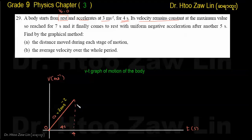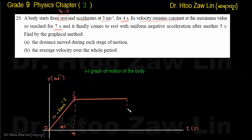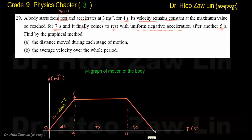The velocity remains constant for a period. Finally, the object comes to rest with uniform negative acceleration lasting another 5 seconds. The final velocity at rest is 0.